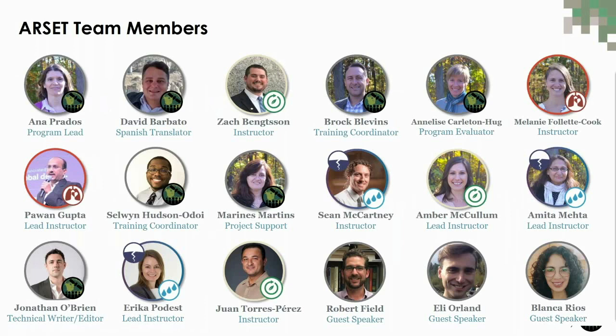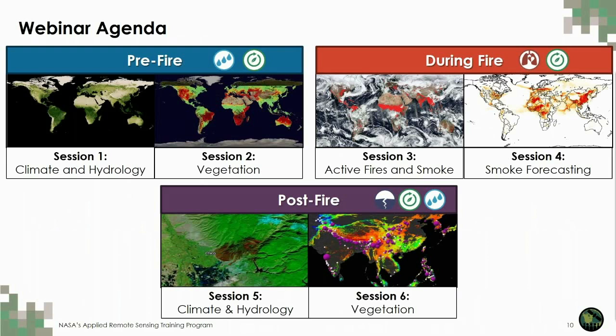This is actually the very first time that all members of the RSET team have collaborated on a webinar series. Sessions one and two will be hosted by the land and water teams, focusing on pre-fire conditions. Today, in session one, they'll describe weather and climate conditions, soil and temperature anomalies, and fire weather. Session two, this Thursday, will cover fire risk and fuels mapping and landscape monitoring.